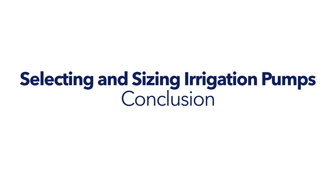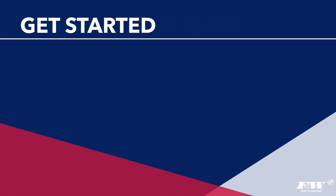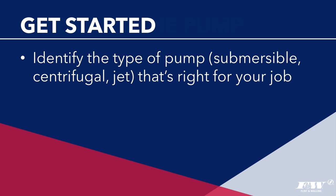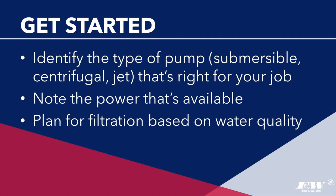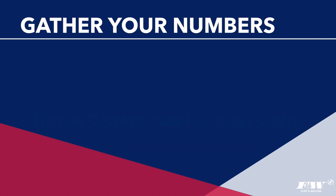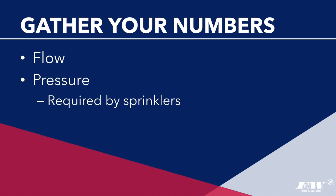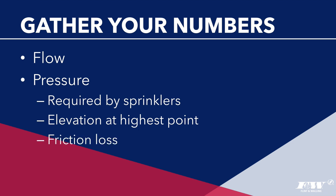Selecting a pump boils down to knowing what kind of pump you need and then knowing the pressure and flow requirements. To review the steps: identify the type of pump (submersible, centrifugal, jet) right for your water source; note the power available (120 or 220 volt, single or three phase); plan for filtration based on water quality; calculate the maximum flow rate in GPM and the total pressure requirements — including sprinkler pressure, elevation, friction loss in pipe/fittings/valves, and suction lift. Then use the pressure and flow rate to locate your needs on a pump curve, select the curve containing your point, and you're ready to order your pump.